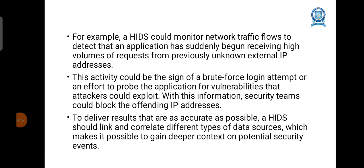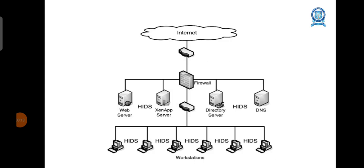Within this information, security teams could block the offending IP addresses. To deliver results that are as accurate as possible, HIDS should link and correlate different types of data sources, which makes it possible to gain deeper context on potential security events.